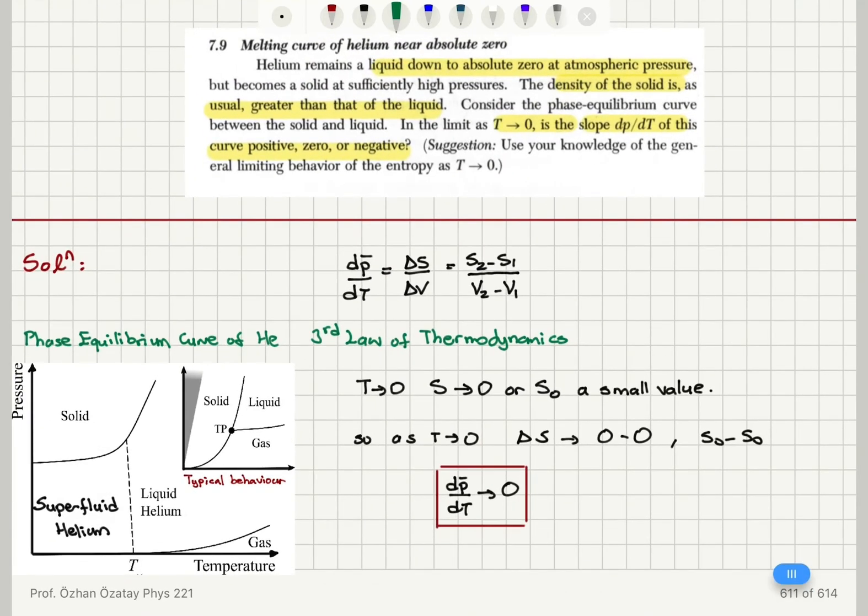You can see that it is a liquid down to absolute zero, but if you have sufficiently high pressure, it becomes a solid. Actually, it has a liquid phase, superfluid phase, and a solid phase.